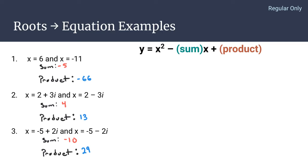So your first equation from those two roots of 6 and negative 11 is y equals x squared plus 5x minus 66. For the second example, your equation will be y equals x squared minus 4x plus 13.